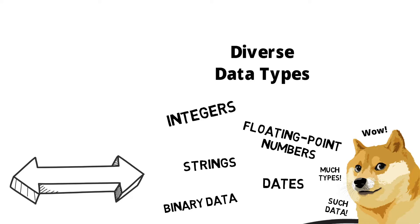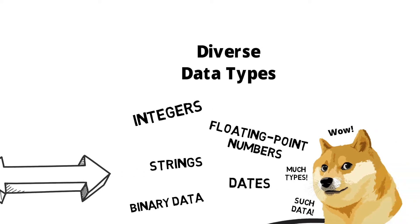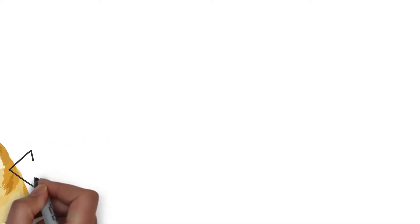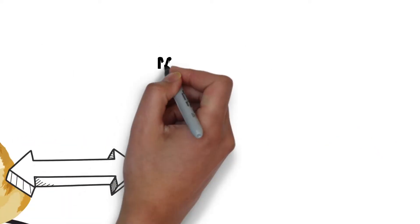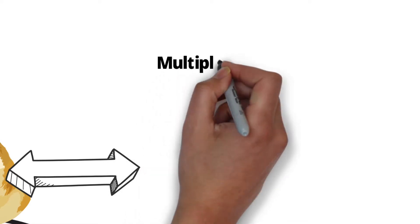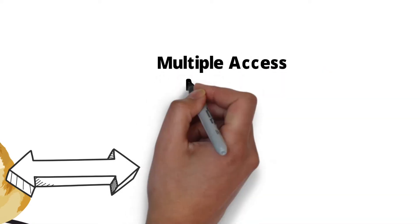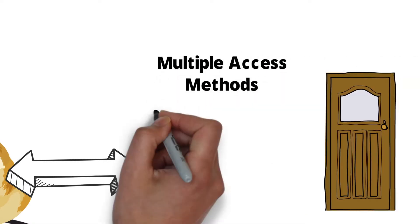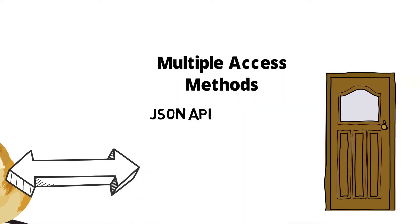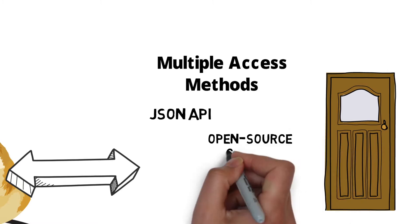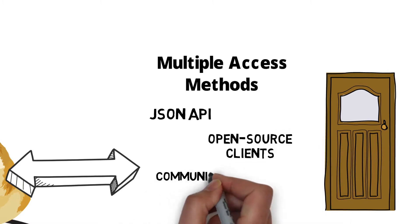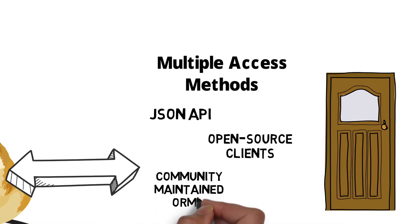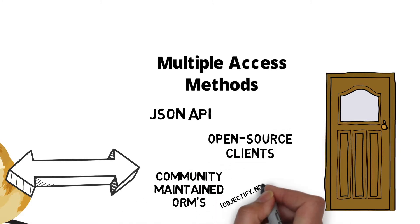How do we access the data? We have multiple access methods. First, a JSON API. We also have open source clients, and community-maintained ORMs such as Objectify and NDB.